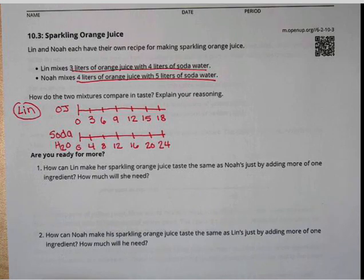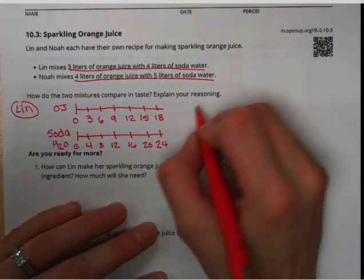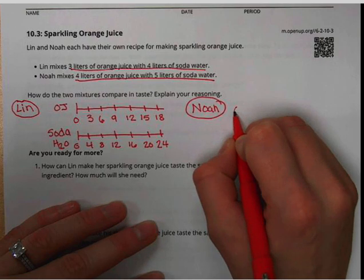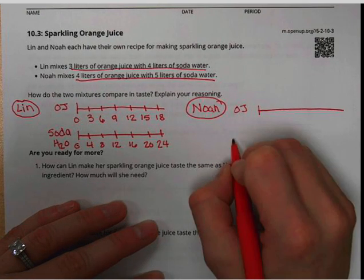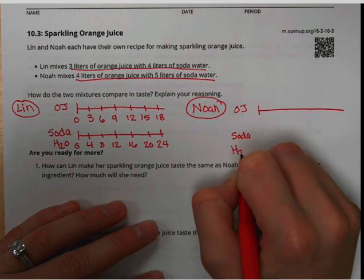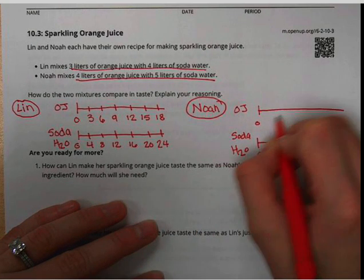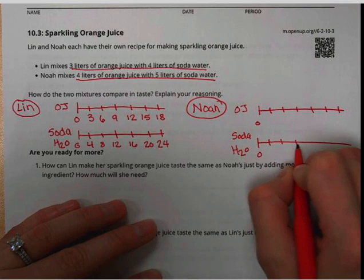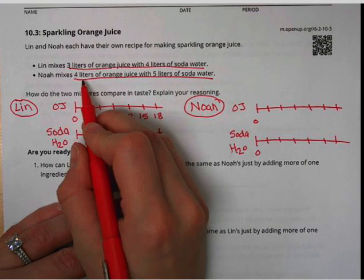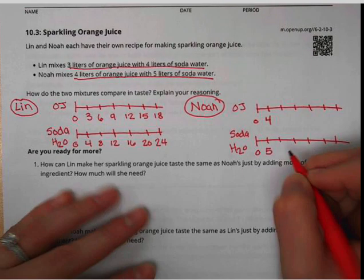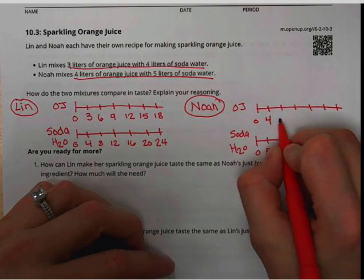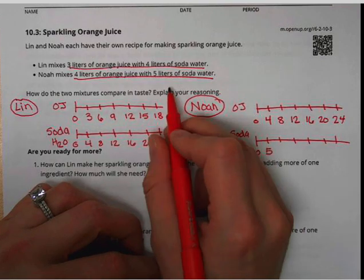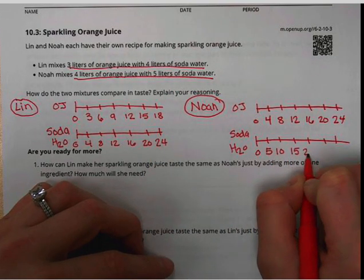And then I'm also going to draw Noah over here, his double number line. So I have two people, so I have to draw two double number lines. Orange juice, soda water. One, two, three, four, five, six tick marks. Noah has four liters of orange juice and five of soda water. So the orange juice line for Noah is counting by fours: 4, 8, 12, 16, 20, 24. And his bottom line is counting by fives: 5, 10, 15, 20, 25, 30.